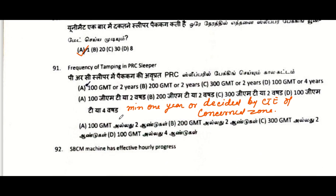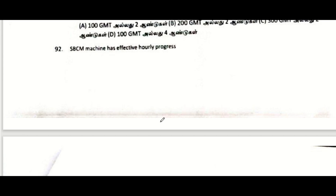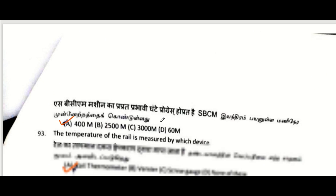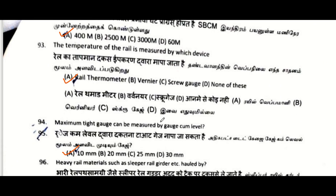How many sleeper packings can Unimat do at one time: one. Frequency of tamping in PSC sleeper — as per Indian Railway Track Machine Manual, it is minimum one year or as decided by the concerned zonal CSTE/CBCM. Machine effective hours progress: 400 meters.